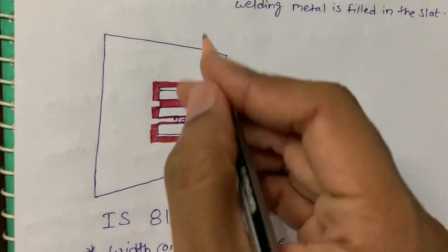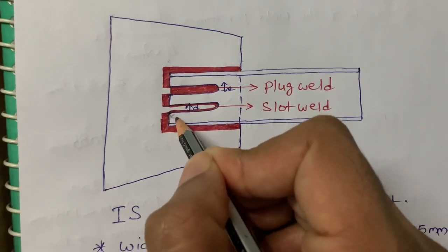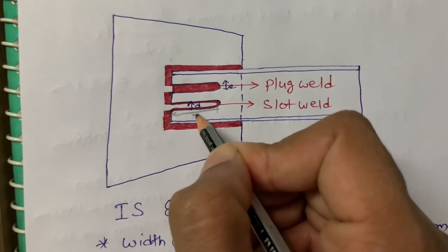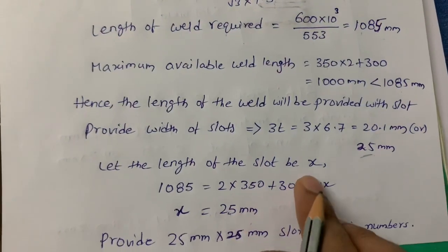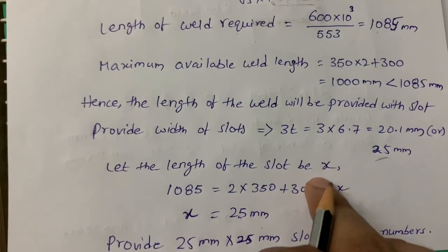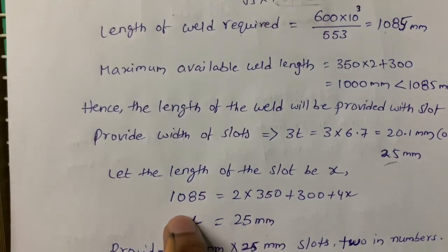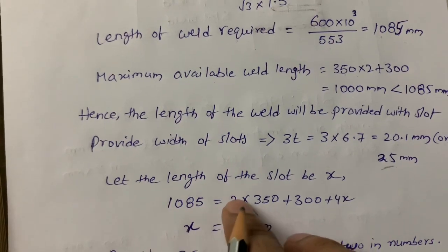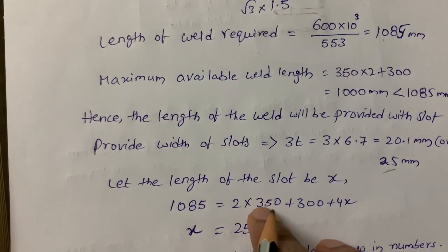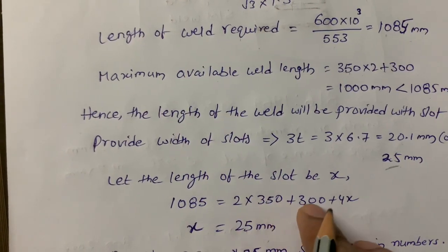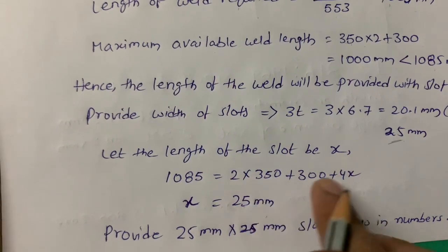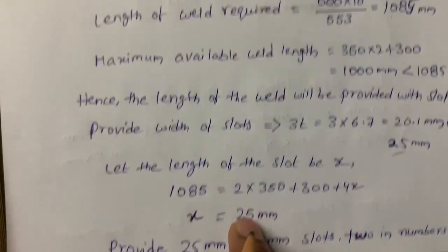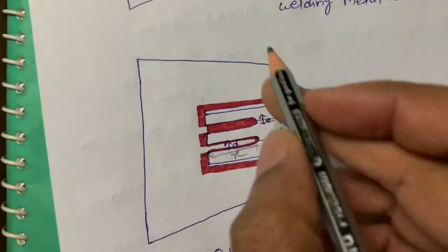Let the length of the slot be x. Setting up the equation: 1085 = 2 × 350 + 300 + 4x = 1000 + 4x. Solving: 4x = 85, so x ≈ 25 mm (rounded up). Therefore the length of the slot is 25 mm.